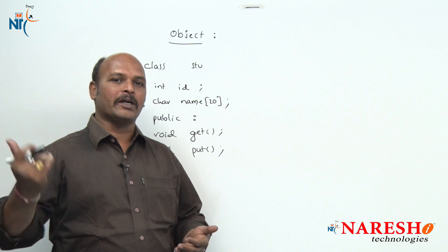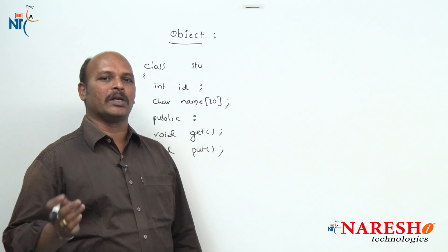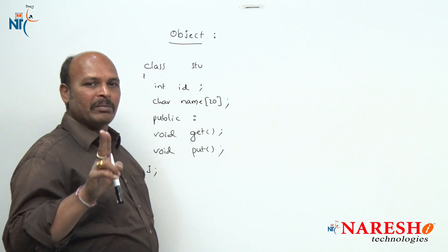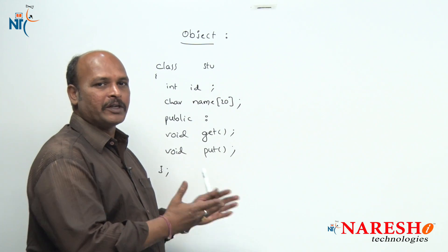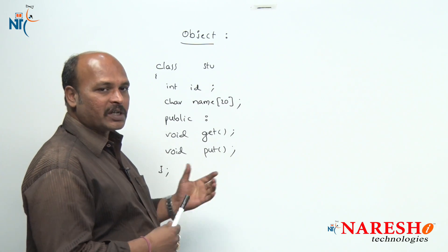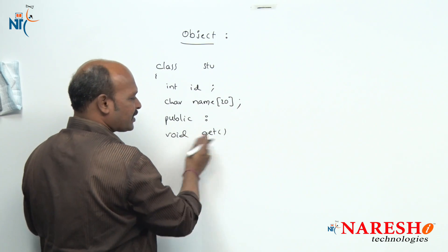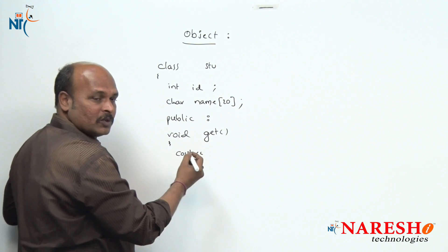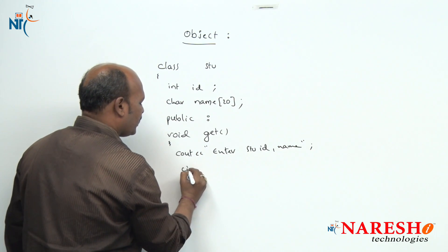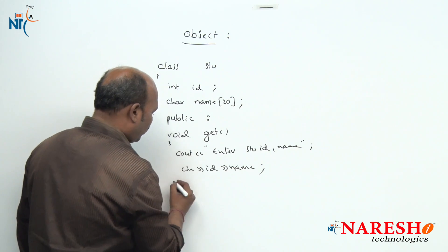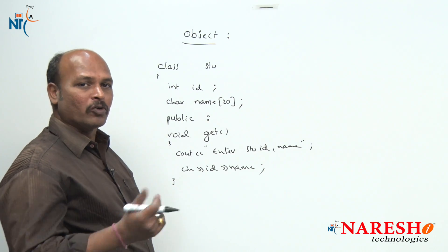The second method is defining the member function outside the class. When defined outside, it does not become an inline member function. For example, when the definition is inside the class, for the get function it would look like: cout, enter student id and name, then cin id and name — that is a member function definition inside the class.